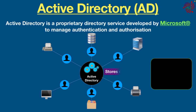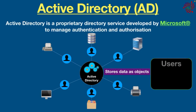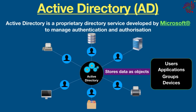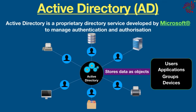Active Directory is a database that stores data as objects, which include users, applications, groups, and devices. These objects are categorized according to their names and attributes.